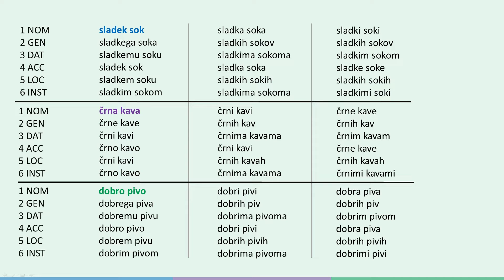Let's choose a random word from all 54 options on screen — 'dobri pivi', for example. Pivo, the basic form of the word, is green, so neuter. We're located in the middle column, so exactly two of something. And we're in the fourth row from top to bottom in our square, which means accusative. The gender of 'dobri pivi' is neuter, the number is dual, and the case is accusative. So if you'd like to order two good beers, the word you're looking for is 'dobri pivi' because you, the subject, would like to order — the verb — two good beers, the object.